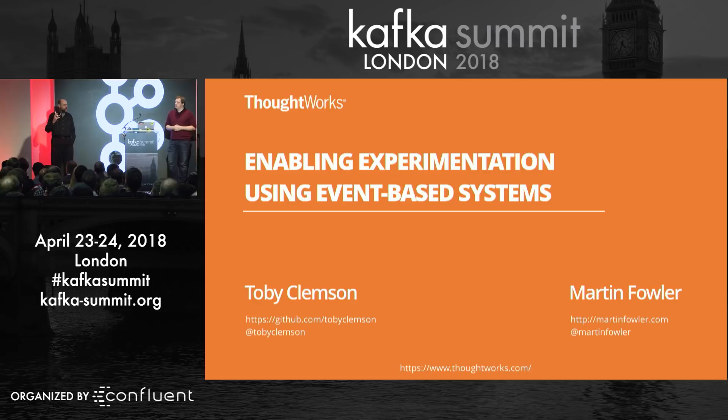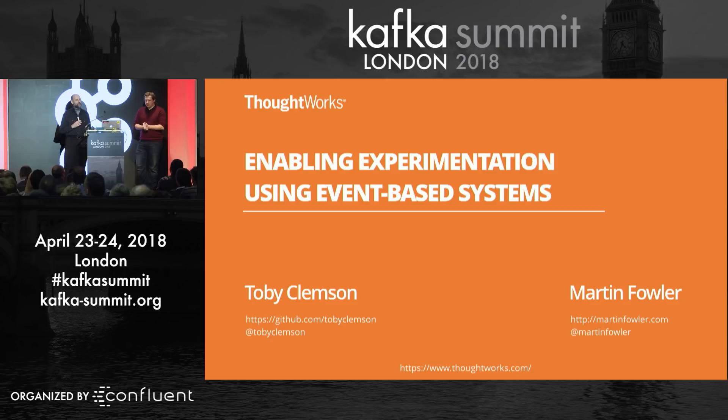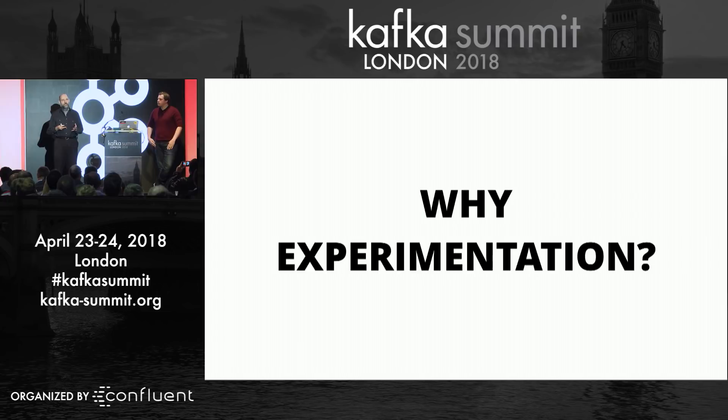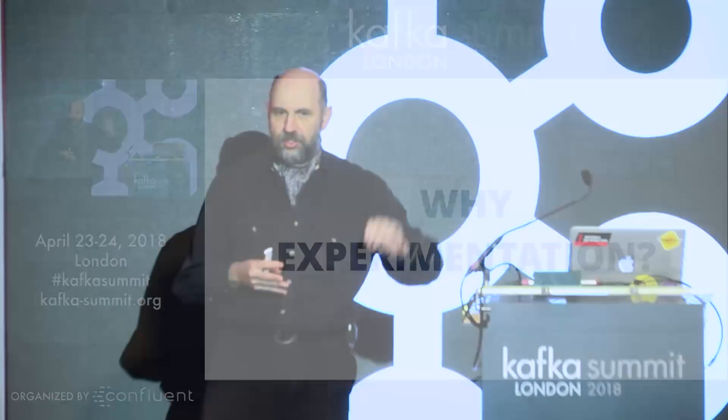So we're going to talk today about using events to get experimentation in a system, which immediately raises the question: why are we talking about experimentation? A way to think about how we get here is if we look at the way software teams have developed over time. In the old days, people would just come up with big statements about all the things they wanted done — go away for a few years and come back when you've done it. We've shifted away from that, largely driven by the notion of agile software development.